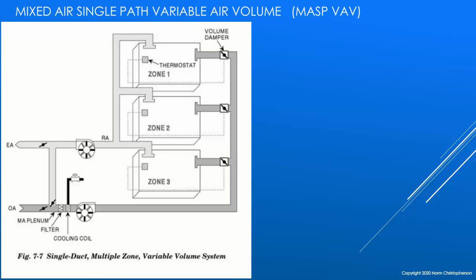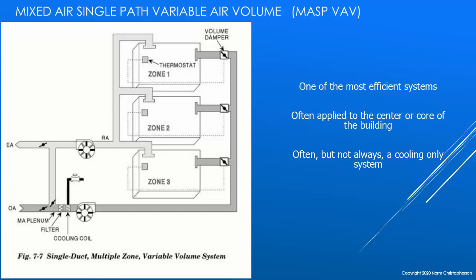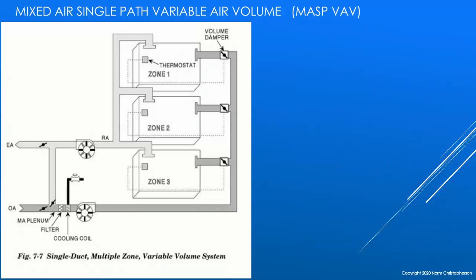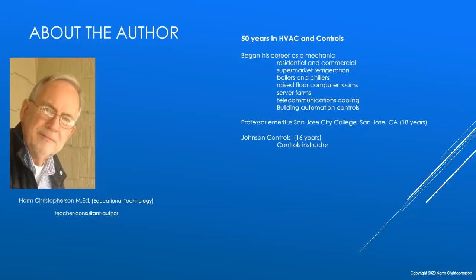Usually this variable air volume system serves the core — the center of a building — while a different system handles the perimeter. The core of the building usually needs cooling and not heating because it is self-heating: all the lights, people, computers, and equipment inside generate heat, and since the core is not near an outside wall, that heat builds up and requires cooling. That's the variable air volume system in a nutshell. That concludes Part 1. In Part 2, we're going to cover four more classifications of HVAC system types. Thanks for tuning in — this is Norm Christofferson, and I will see you again next time.